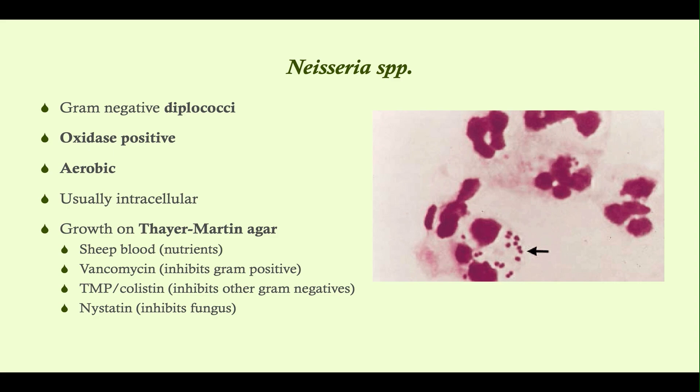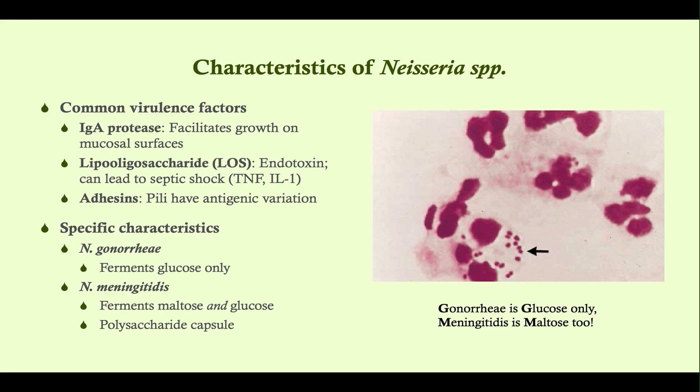The nutrients help Neisseria grow while the antibiotics prevent other organisms from growing. Thayer-Martin agar contains vancomycin, which inhibits gram-positive growth; trimethoprim and colistin, which inhibit other gram-negatives besides Neisseria; and nystatin, which inhibits fungus. With those antibiotics, it selects specifically for Neisseria — so you need to know Thayer-Martin agar for Neisseria.